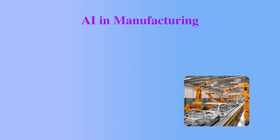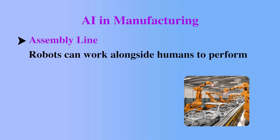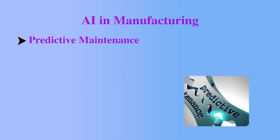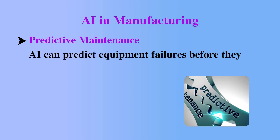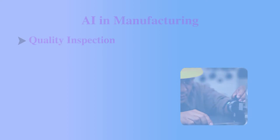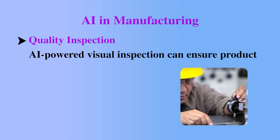Next field: AI in manufacturing. Assembly line — robots can work alongside humans to perform repetitive and dangerous tasks, increasing efficiency and safety. Predictive maintenance — AI can predict equipment failures before they happen, reducing downtime and maintenance cost. Quality inspection — AI-powered visual inspection can ensure product quality and consistency.